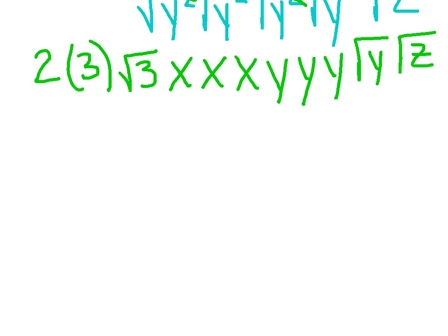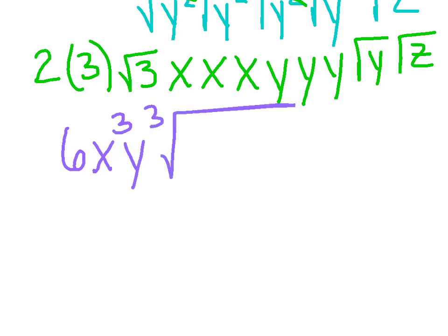The last step: I'm going to put everybody who's not in a radical out front. So I've got 2 times 3 — that's a total of 6. I've got x, x, and x — x times x times x makes x cubed. I've got y times y times y — that's y cubed. And then anything else I'm going to stick under the radical together: that's the 3, the y, and the z.